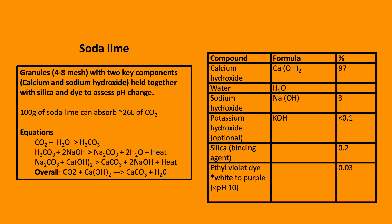It is composed mainly of calcium hydroxide, 97%, but also sodium hydroxide, 3%. The granules are held together with silica and contain a dye that changes colour when the soda lime reaches its carbon dioxide absorbing capacity.